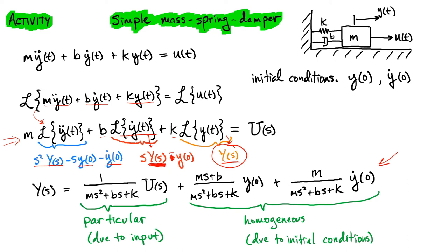So we're going to solve all, put all of these y of s terms together, and then that's going to be essentially this denominator, ms squared plus bs plus k. That's why we're dividing it, and that's why it appears in the denominator on all three terms over here.